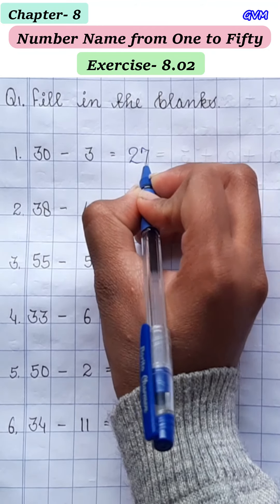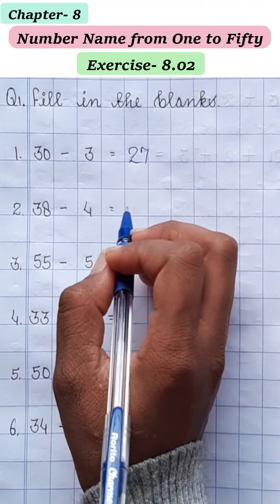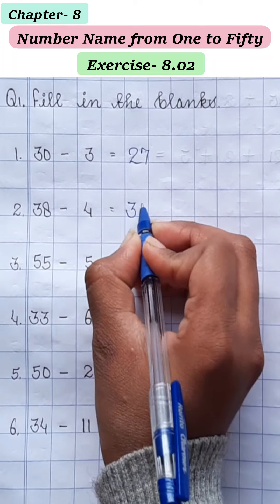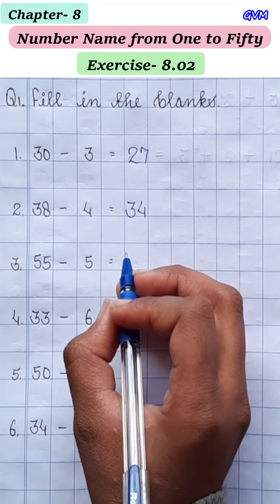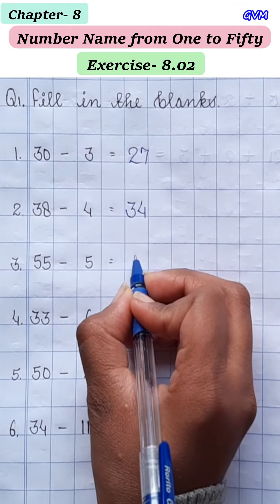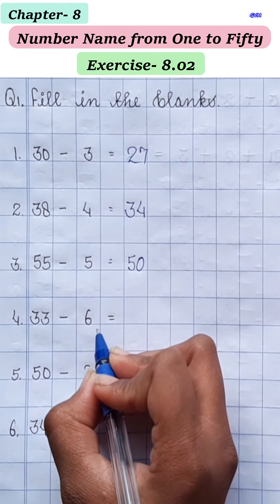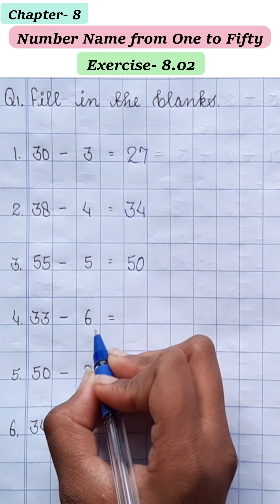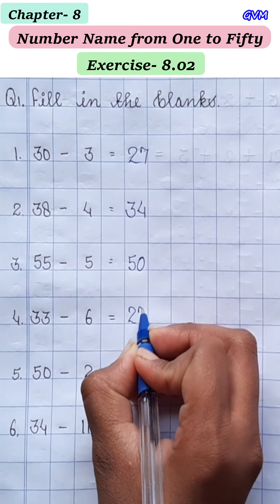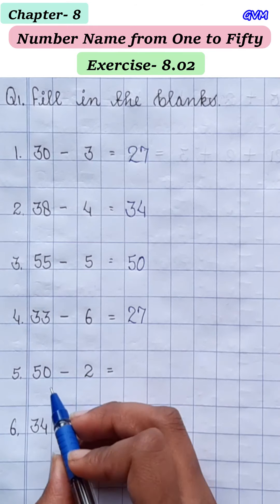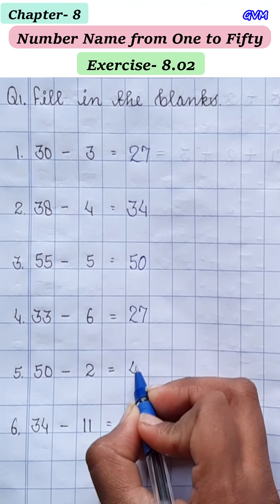27। 38 minus 4 = 34। 55 minus 5 = 50। 33 minus 6: 33 में से 6 less करेंगे तो बचेगा 27। 50 minus 2: 50 में से 2 less करेंगे तो बचेगा 48।